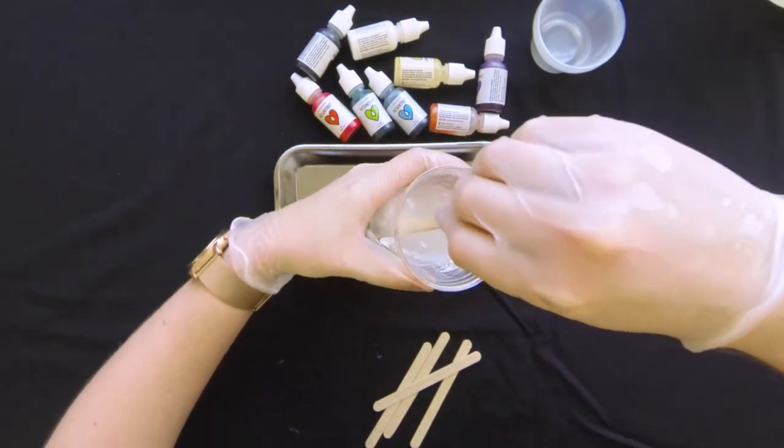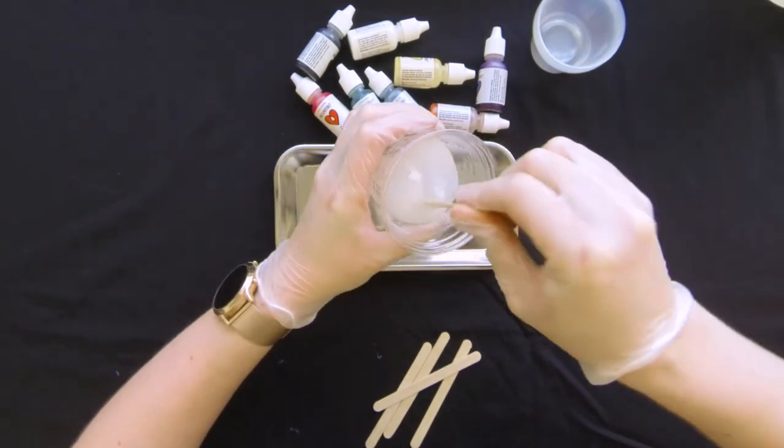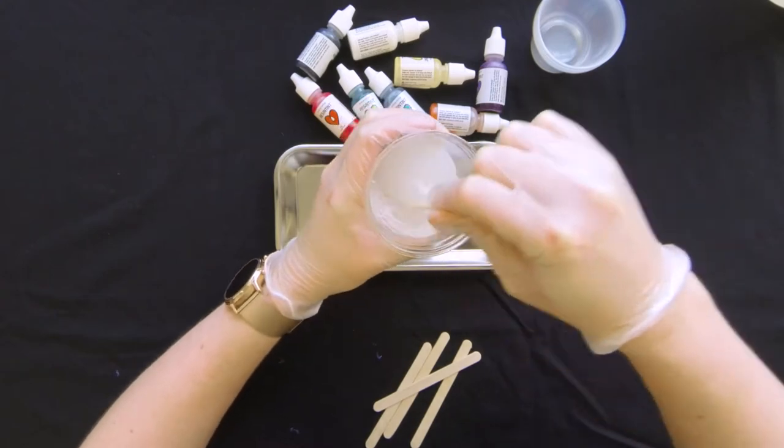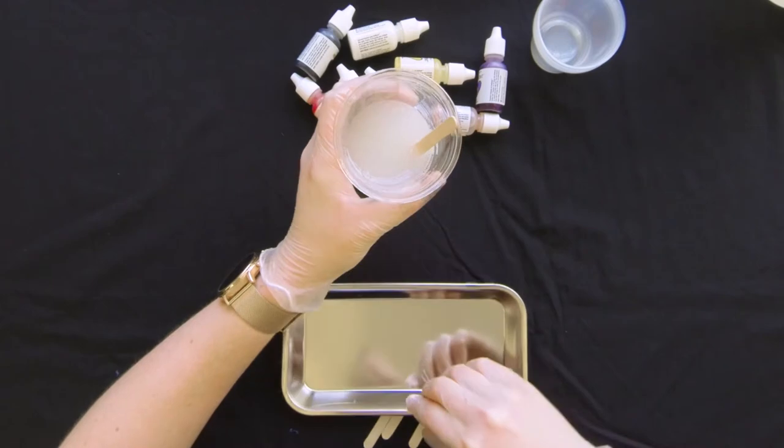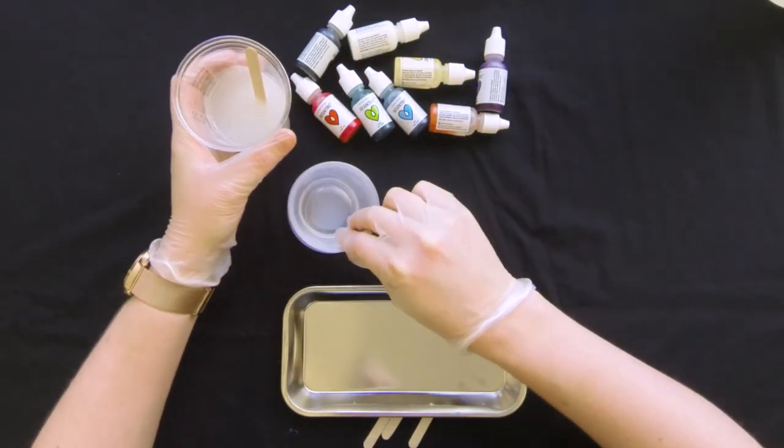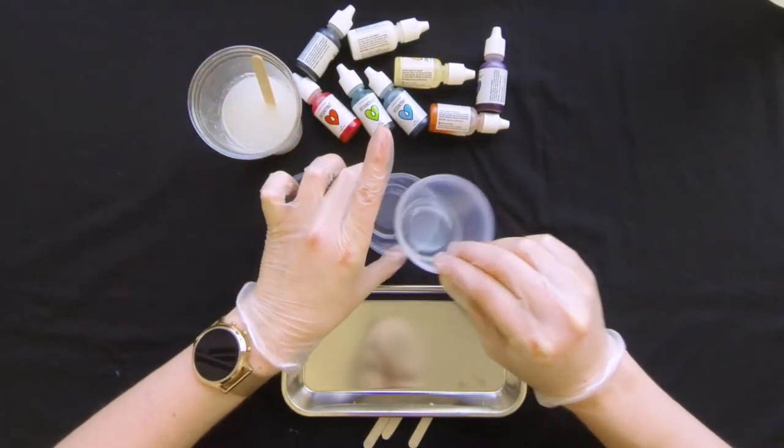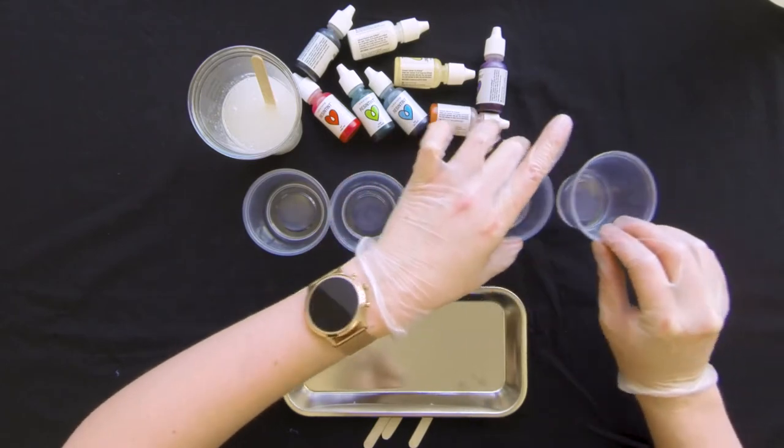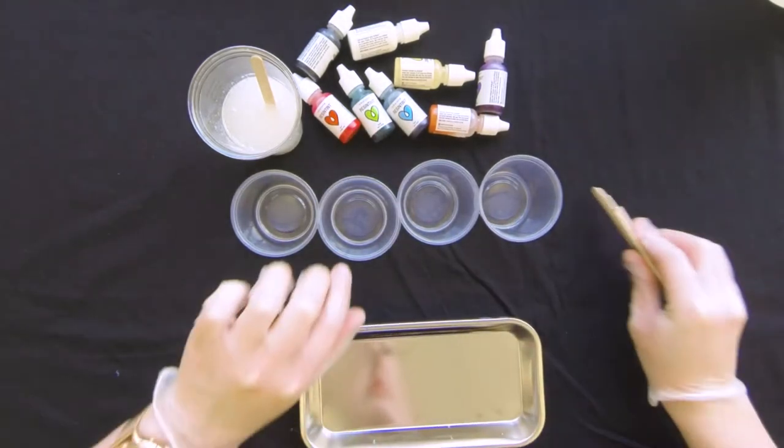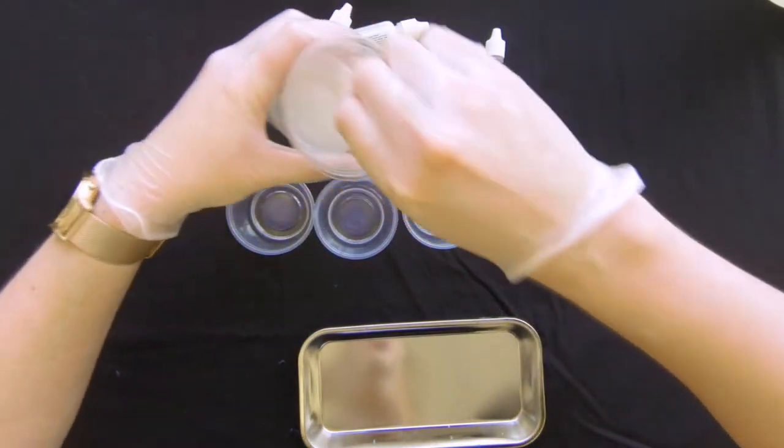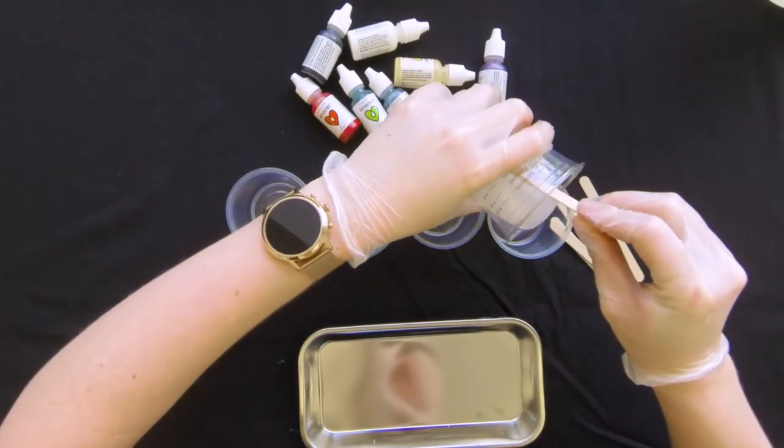Okay, three minutes up. You can see we've got lots of bubbles and stuff in here. Make sure that we're scraping the sides really well. Now I'm going to split this up into a few different cups so I can mix in my different colors that I want to do today.